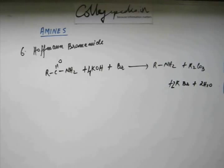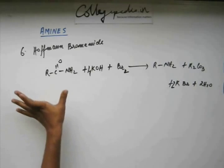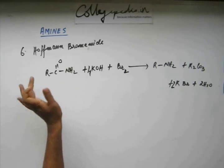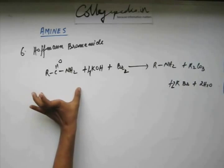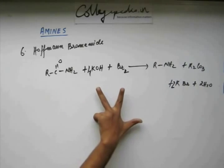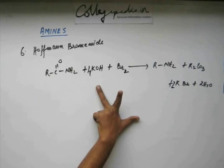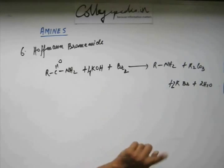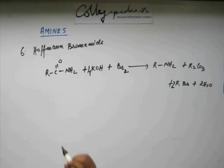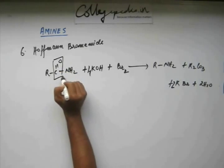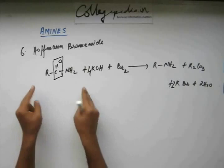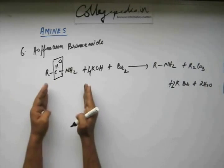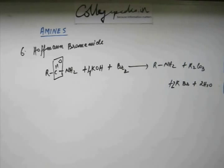What we are concerned with is this amide as substrate, Br₂ as reagent, and the resulting amine as product. The reaction is Hoffmann Bromamide. The substrate is the amide, the reagent is base and bromine, and the product is the amine. To write the product, remove the carbonyl group (C=O) and attach R with NH₂ to get the amine.